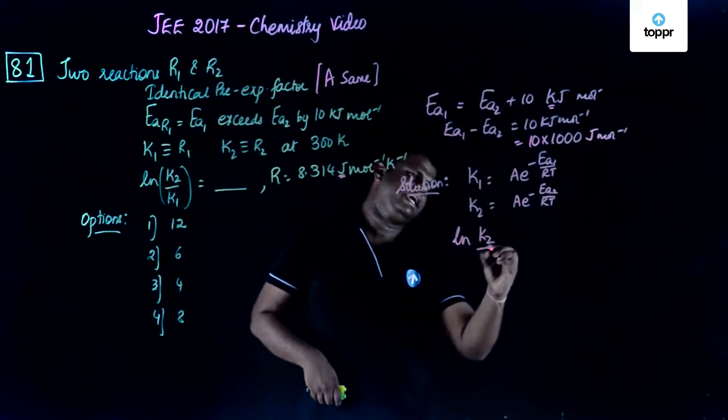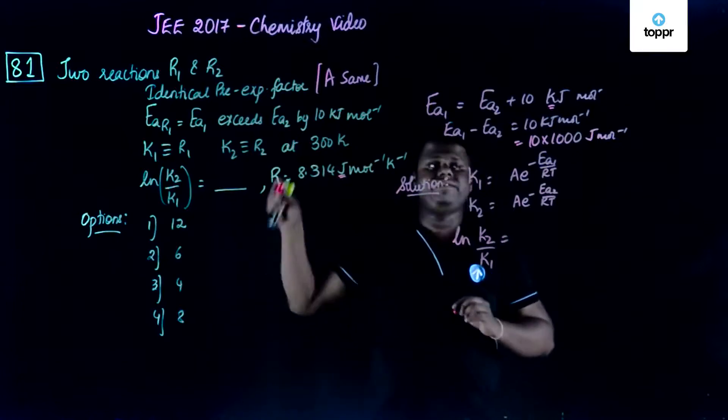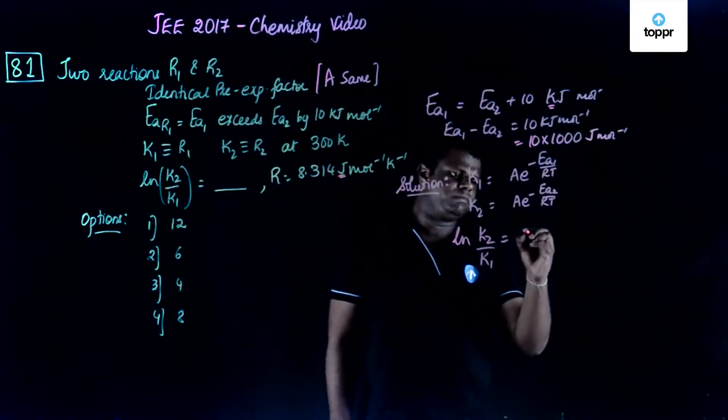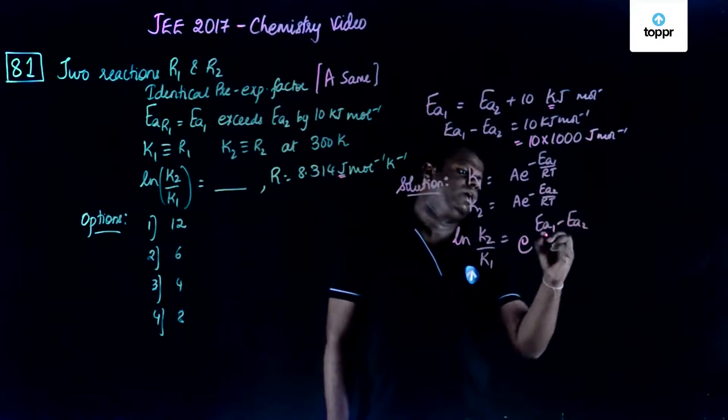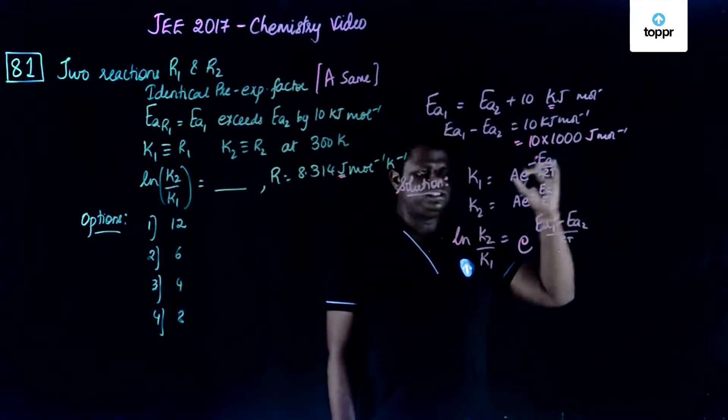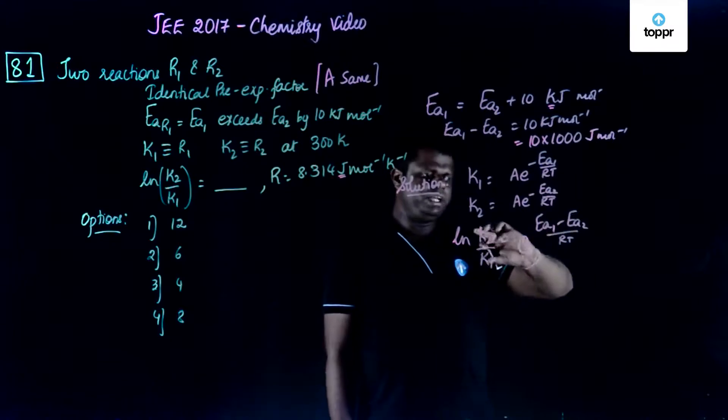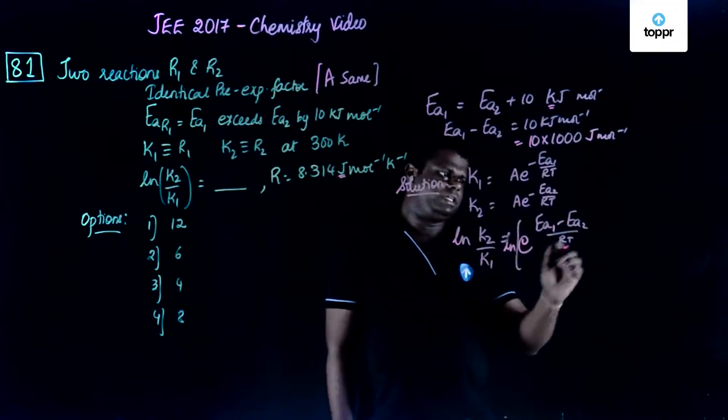We want ln(k2/k1). So ln(k2/k1) would be equal to—A gets cancelled because the pre-exponential factors are same. We would write e raised to (Ea1 minus Ea2) upon RT. When you take that subtraction and invert k2 by k1, you get this value.